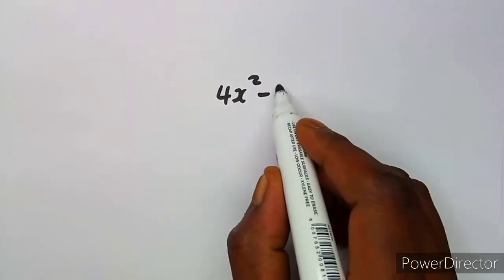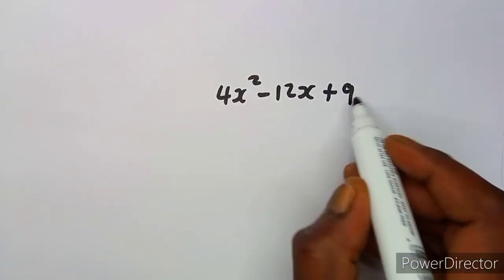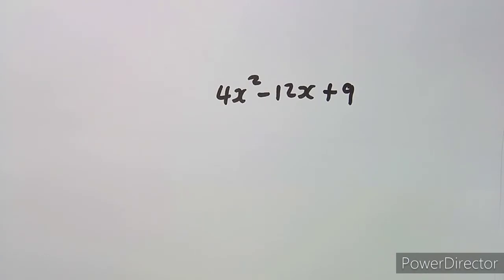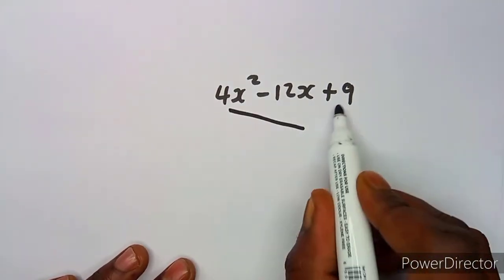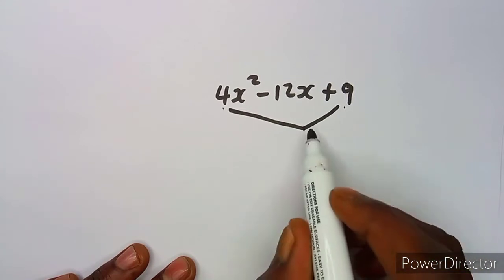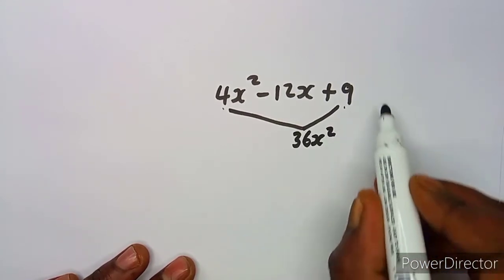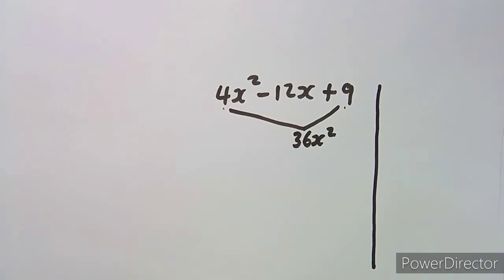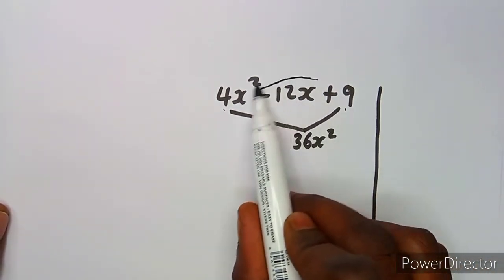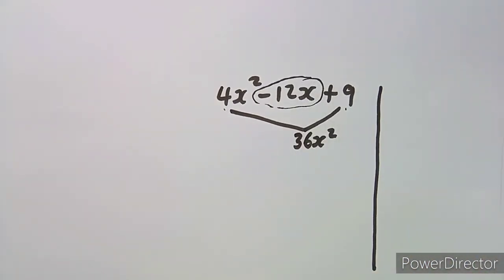We are given 4x squared minus 12x plus 9. This is actually a quadratic expression, and whenever you're factorizing a quadratic expression, what you're going to do is multiply the first term and the last term — which is 4x squared and 9 — and that's going to give us 36x squared. Now you need to determine two numbers that when you multiply them give you 36x squared.